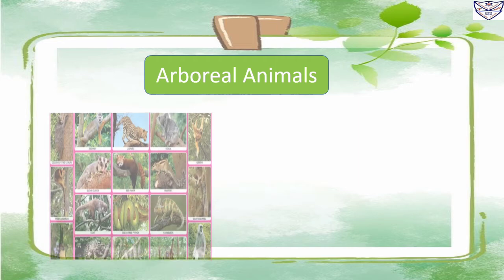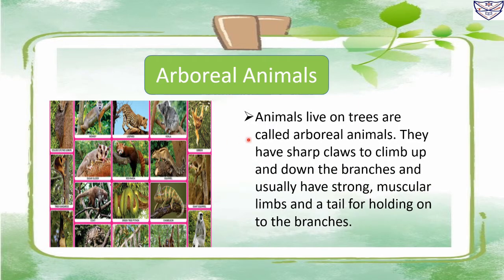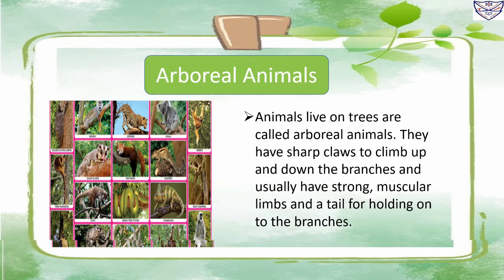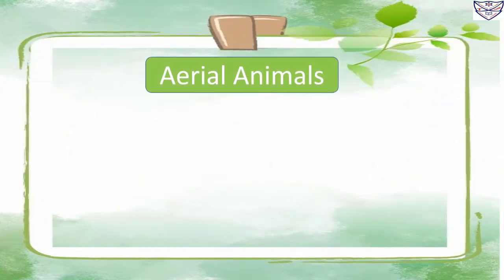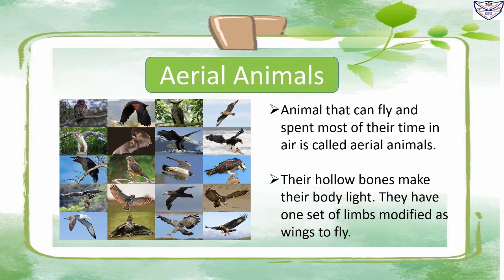Arboreal animals: animals that live on trees are called arboreal animals. They have sharp claws to climb up and down branches, and usually have strong muscular limbs and a tail for holding onto branches. For example, monkey and koala bear. Aerial animals: animals that fly and spend most of their time in air are called aerial animals. Their hollow bones make their body light, and they have one set of limbs modified as wings. All birds except flightless ones belong to this group, and bats also form part of this group. The mass movement of birds from colder to warmer places is called migration.